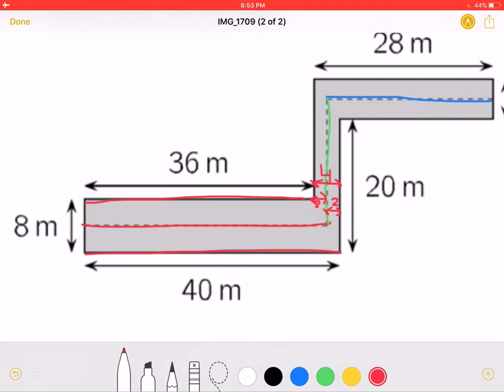So in order to find the length of the red part of the path, we must take 40 and subtract this 2 over here to give us a total of 38 meters for the red part.